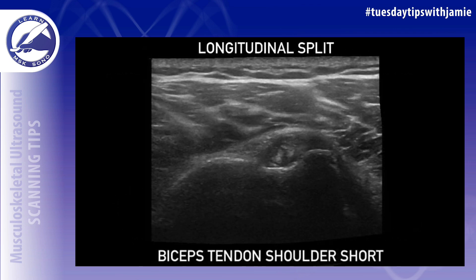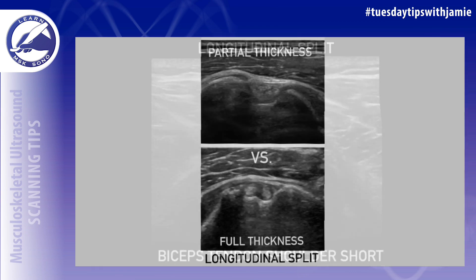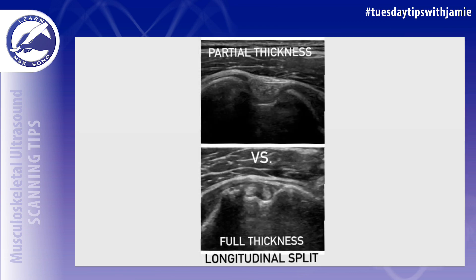I already showed some examples of a split tear in the ECU and FCR tendons in the wrist, and this is an example of a split tear in a biceps tendon in the shoulder. A tear is considered full thickness when the split extends entirely from one surface to another. This is an example of a full thickness versus a partial thickness split.